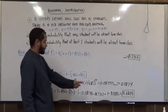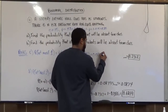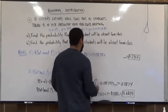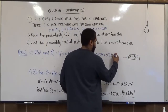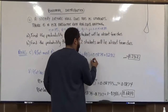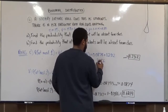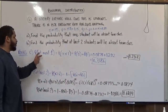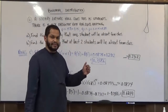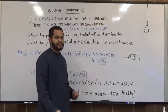Lucky for us, we already have both probabilities. P(0) is 0.0874 and P(1) is 0.2312. Adding these together: 4 plus 2 is 6, 1 plus 7 is 8, 3 plus 8 is 11 — carrying the 1 gives us 0.3186. So the probability of at most 1 student being absent is 0.3186, or 31.86% when converted to a percentage.